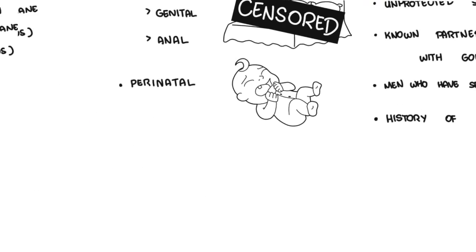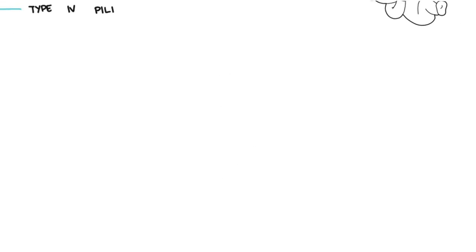Let's talk about the pathophysiology of Neisseria gonorrhea and how it causes all the complications associated with it. Firstly, the acquisition of Neisseria gonorrhea is through sexual contact, mainly, as we have learned.